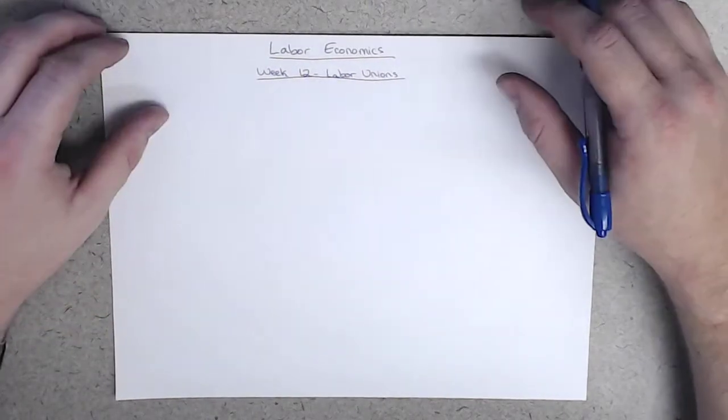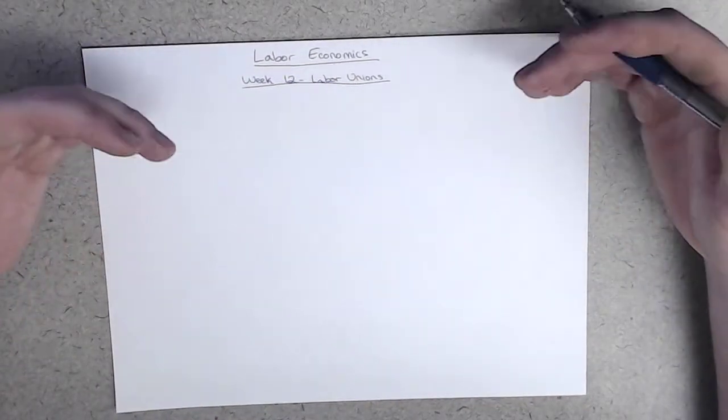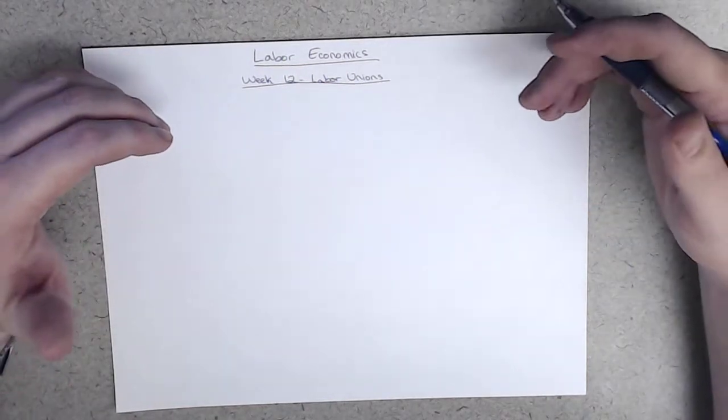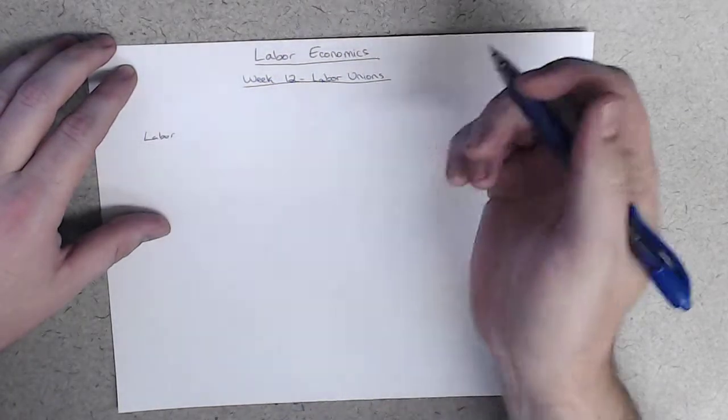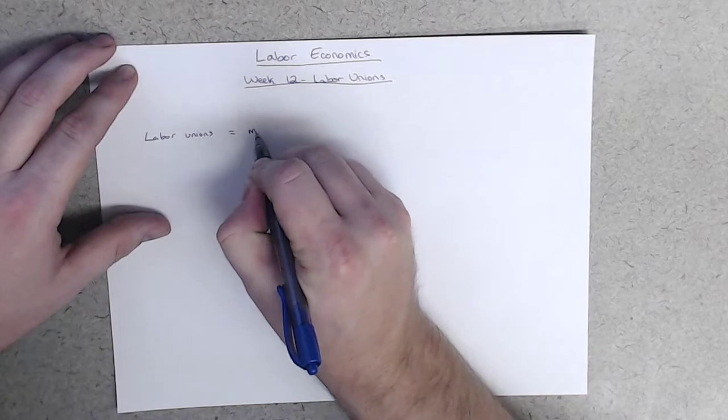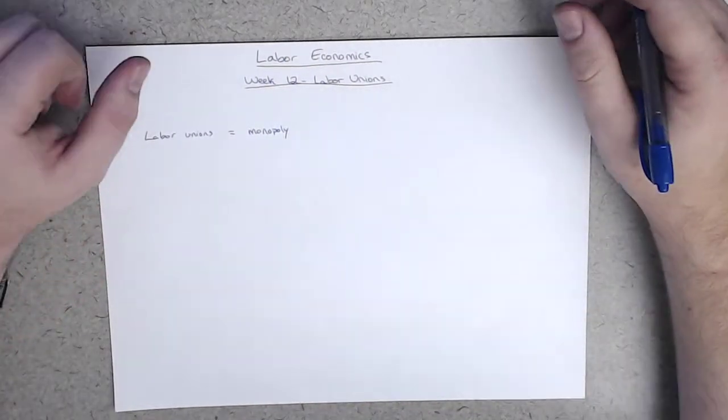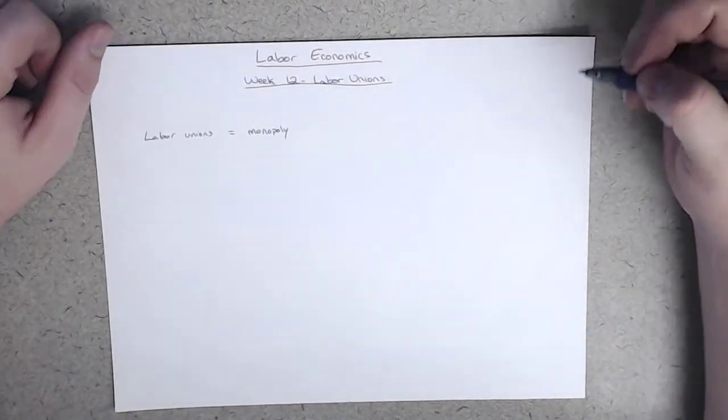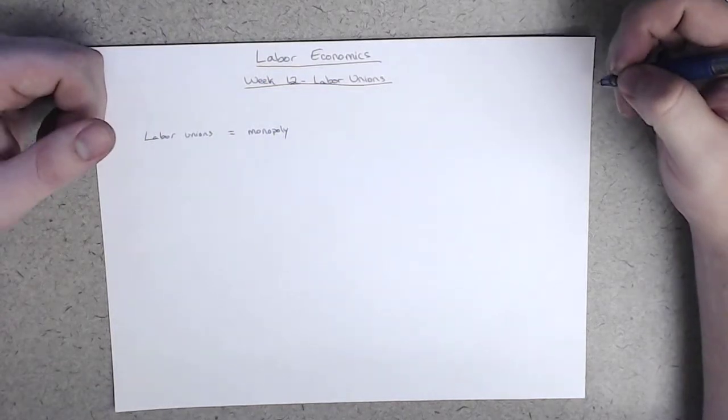This is a contentious issue and one that we're going to be exploring in a very objective way. Now, some people will view labor unions as a form of monopoly. So, a common view of labor unions is that they are essentially a monopoly that, while beneficial for the members, impose substantial costs on other non-union members of society.